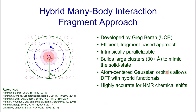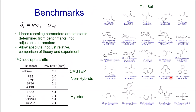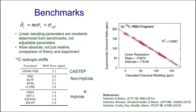We use the cluster-based approach — a hybrid many-body interaction fragment method developed by Greg Barron at UCR. It's an efficient fragment-based approach that's intrinsically parallelizable, allows building large clusters of 30-plus angstroms to mimic the solid state, and uses atom-centered Gaussian orbitals for DFT with hybrid functionals, giving high accuracy for NMR chemical shift calculations. Greg and Josh Hartman benchmarked this approach with a test set comparing predicted and experimental chemical shifts for a number of functionals, also yielding the linear rescaling parameters.